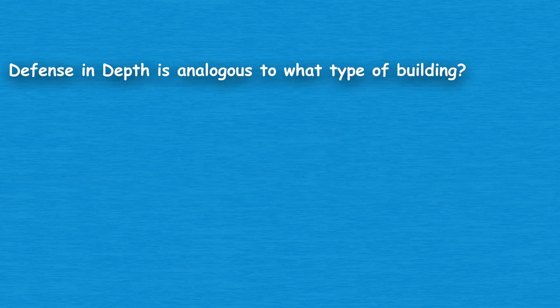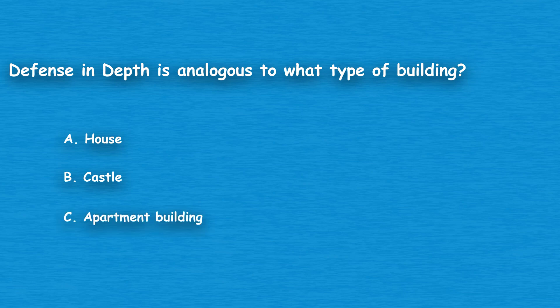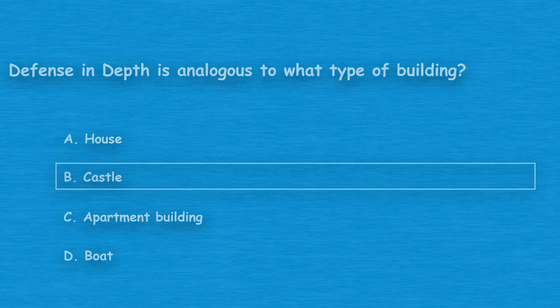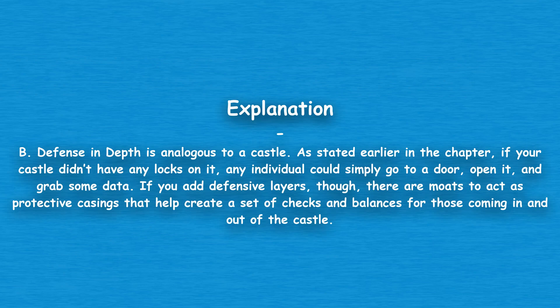The next question: defense in depth is analogous to what type of building? Option A: House. Option B: Castle. Option C: Apartment Building. Option D: Boat. The correct answer is Option B, Castle. Defense in depth is analogous to a castle — if your castle didn't have any locks on it, any individual could simply go to a door, open it, and grab some data. If you add defensive layers, there are modes to act as protective casings that help create a set of checks and balances.